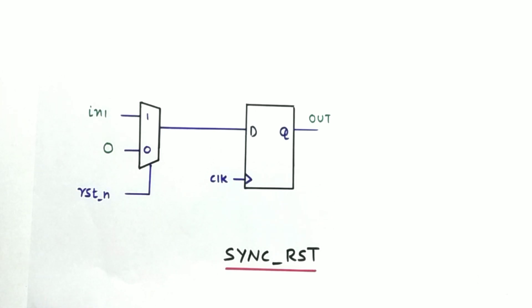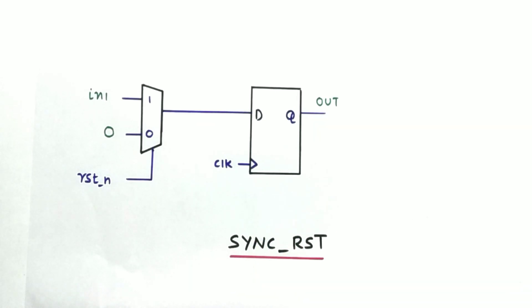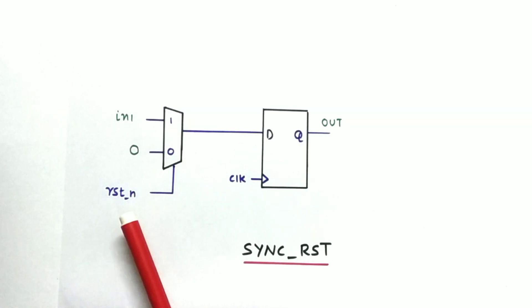There is no dedicated reset pin in the flop. Reset signal is a part of logic that drives the data input of the flop. So here we are using a MUX logic to give the reset. The reset is active low. Whenever the reset is zero, the output will be zero.